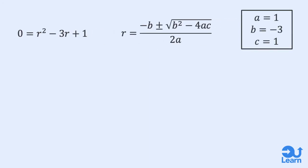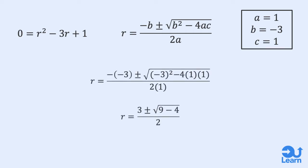a is the coefficient of r squared, which equals to 1, b is the coefficient of r, which is negative 3, and c is the constant 1. When we substitute these values into the formula, we can simplify after to get 3 plus minus square root 5 all over 2. We will calculate the two values of r.